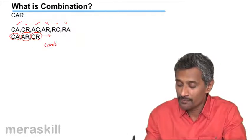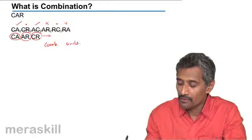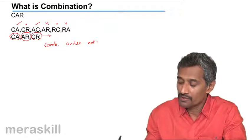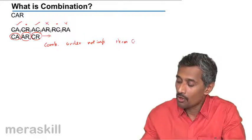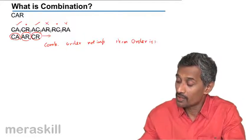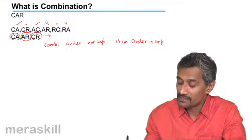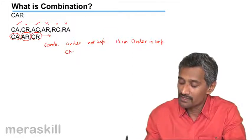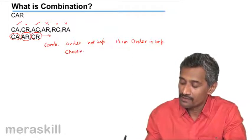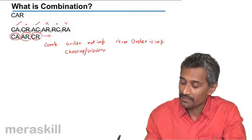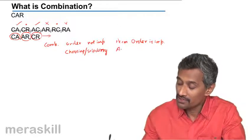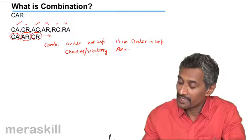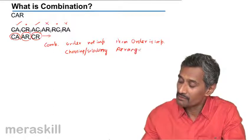In combination, order is not important, whereas in permutation, order is important because it's an arrangement. Combination is basically choosing a certain number of items out of a total, whereas after selection, when you arrange them, it becomes a permutation.